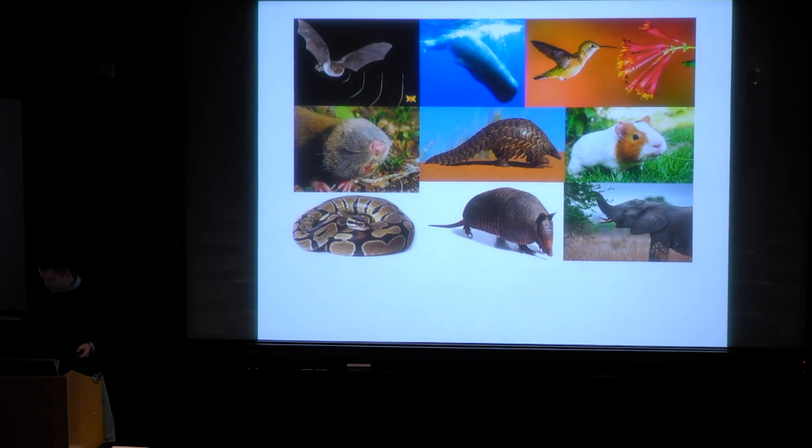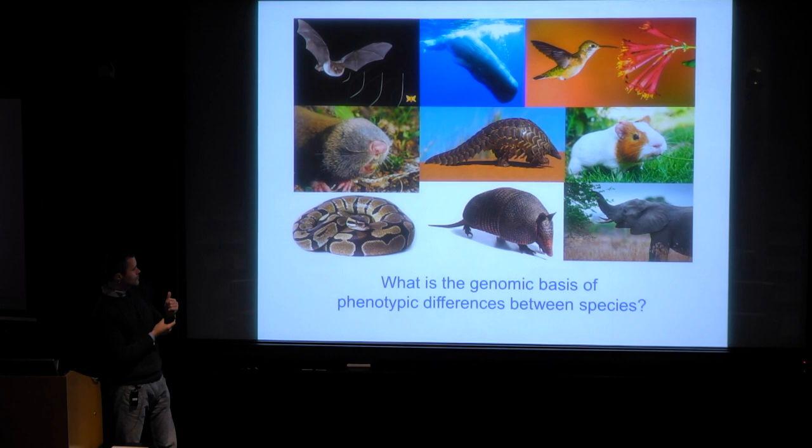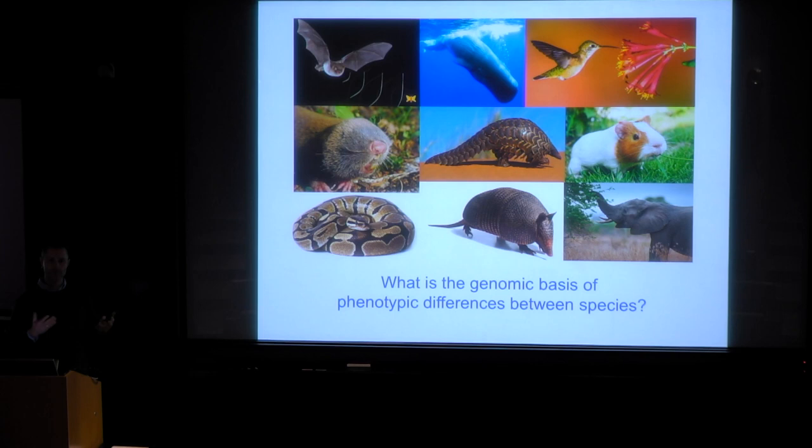In the genomic era, all these species and many others have sequenced genomes. Because many of the traits have a strong genetic basis, this allows us to address a challenging but fundamentally important question: what is the genomic basis that underlies these phenotypic differences, and therefore this phenotypic diversity? This question is the main question that unites the work we are doing in the lab.